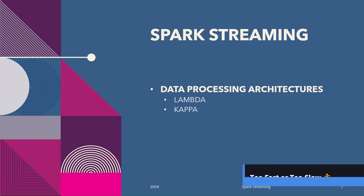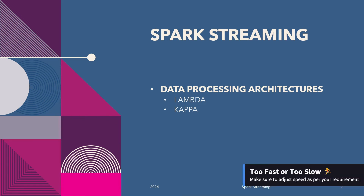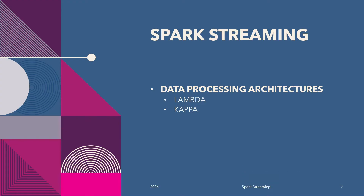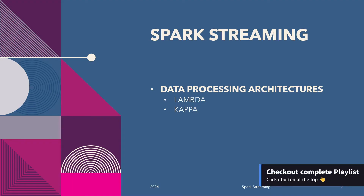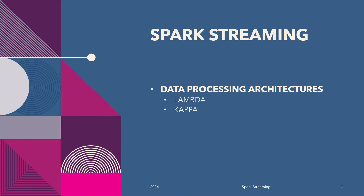Hello and welcome back. Before we can move forward in streaming, we need to know two of the popular data processing architectures. The first one is Lambda and the second one is Kappa. Both of these architectures are quite simple to understand, and today we will see the difference between both of them. Both of them have their own use cases and benefits, so without any further delay let's understand these architectures.